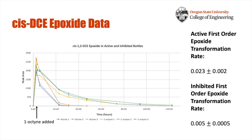Here you are seeing the CIS-DCE epoxide plotted as peak area decrease over time. The black arrow indicates the time at which 1-octyne was added to the bottles. As it turns out, there is a significant difference between the rate of epoxide disappearance in active bottles and inhibited bottles. This leads us to believe that the disappearance of CIS-DCE epoxide is due, at least in part, to ELW1's enzymatic activity.